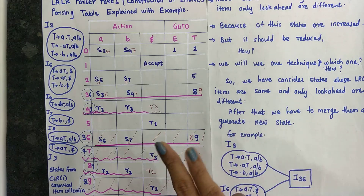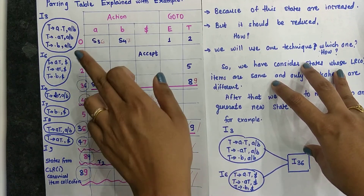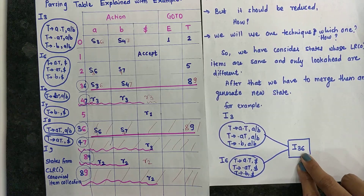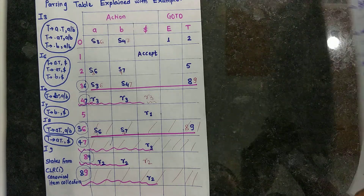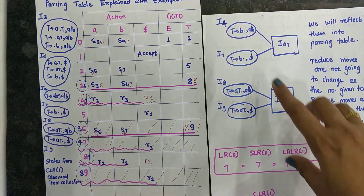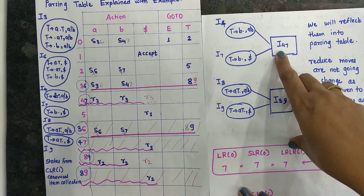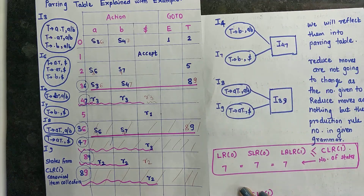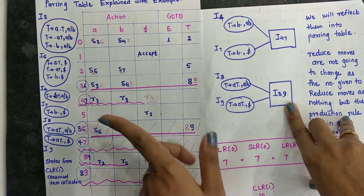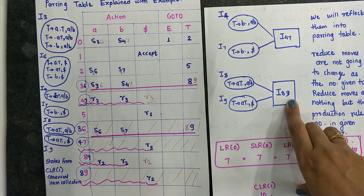We are going to merge those states to generate a new state. For example, I3 and I6 are merged to get the new state I3,6. Similarly, we merge I4 and I7 — where T→B• has lookahead dollar/AB — to get I4,7. Next, I8 and I9 are merged to get I8,9. These newly generated merged states will be reflected in the parsing table.